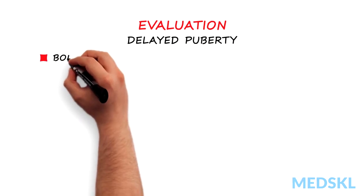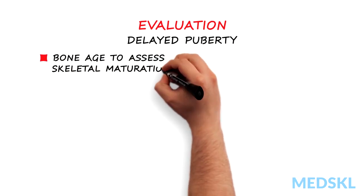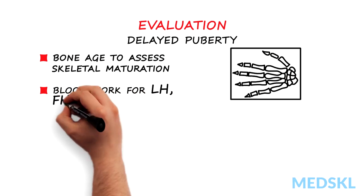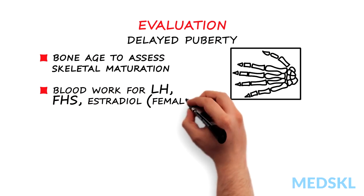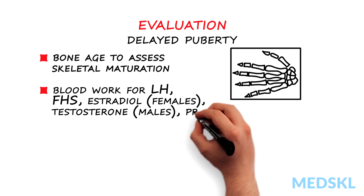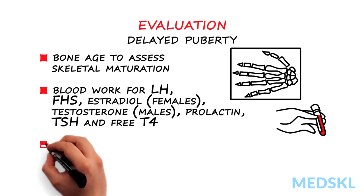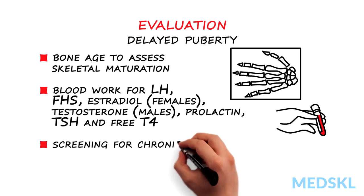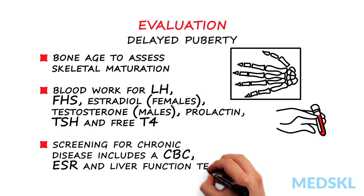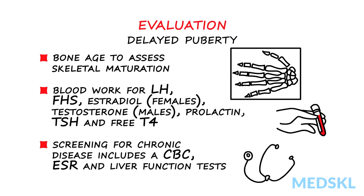Investigations for delayed puberty generally include a bone age to assess skeletal maturation, and blood work for LH, FSH, estradiol, testosterone, prolactin, thyroid stimulating hormone, and free T4. Screening for chronic disease includes a complete blood count, erythrocyte sedimentation rate, and liver function tests. Further investigations are dependent on initial results.